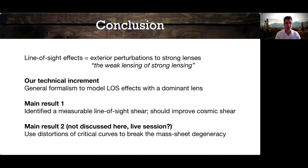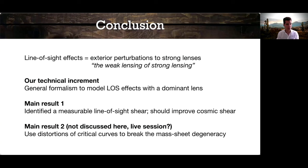In conclusion, line-of-sight effects are external perturbations to strong lensing — what we could call the weak lensing of strong lensing. Our technical contribution has been to propose a general formalism to model those line-of-sight effects in the presence of a dominant lens. Our first main result has been to identify a measurable notion of line-of-sight shear which should greatly improve cosmic shear measurements when combined with strong lensing. A second result — which I didn't discuss here but am happy to address during the live session — is that we identified another probe: the distortions of strong lensing critical curves, which have the ability to break the mass-sheet degeneracy. Thank you very much for your attention.